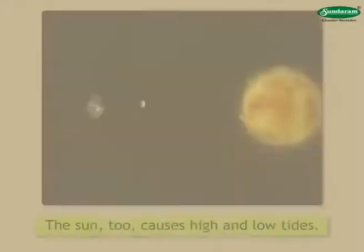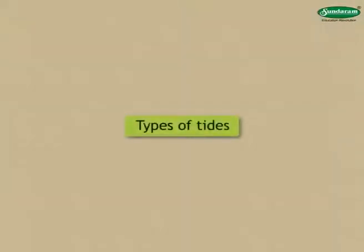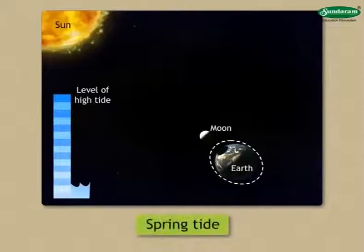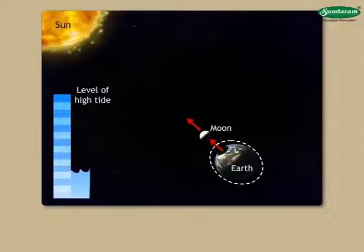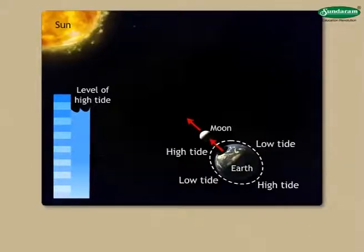In the same way, the sun too causes high and low tides. The first main type of tide is spring tide. The forces of the moon and the sun generating tides operate in one and the same direction on the new moon and the full moon days. This tide is called spring tide. As a result of the greater rise in the water level at the place of high tide, the locations of low tides also experience greater lowering of water level.